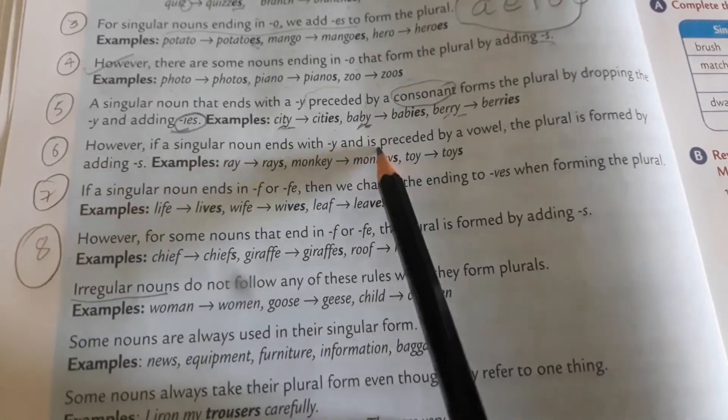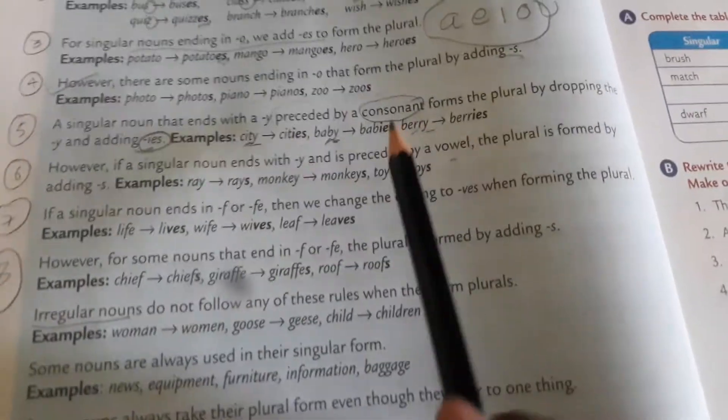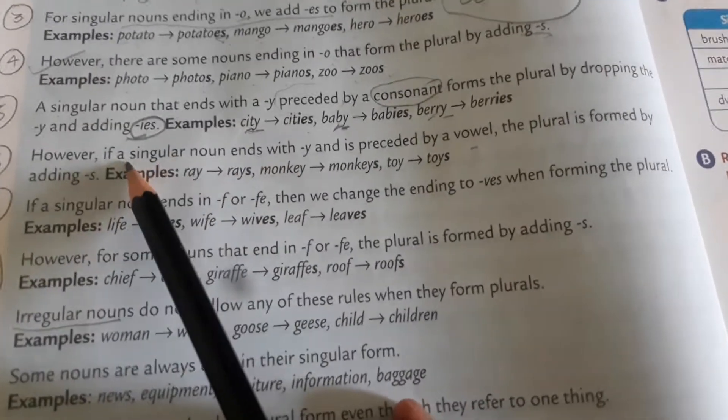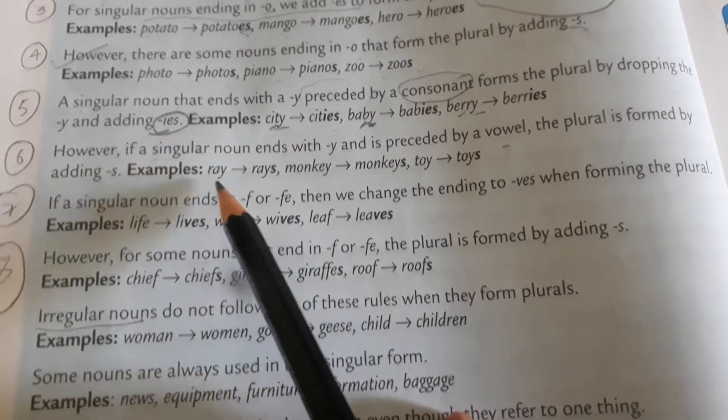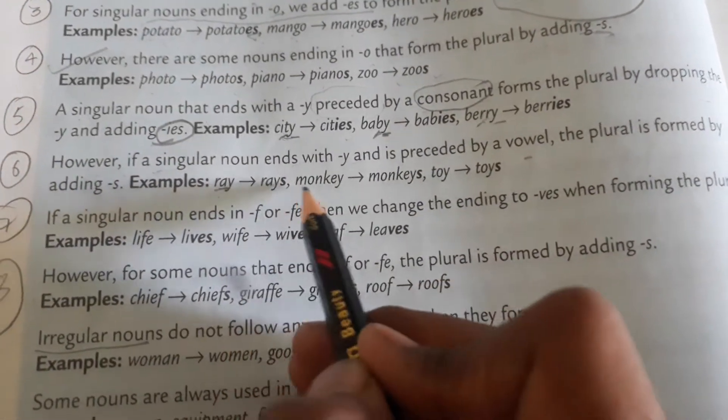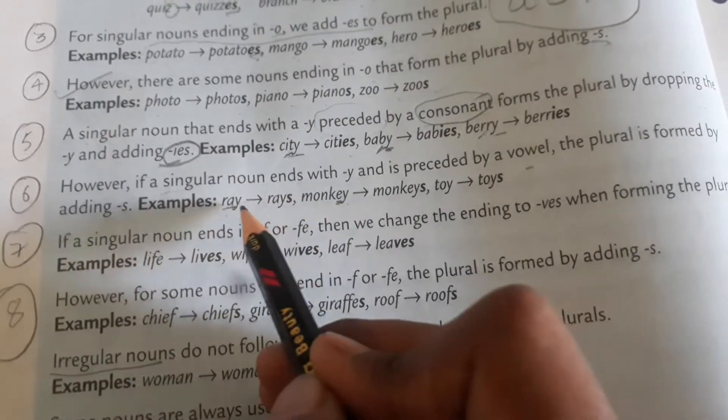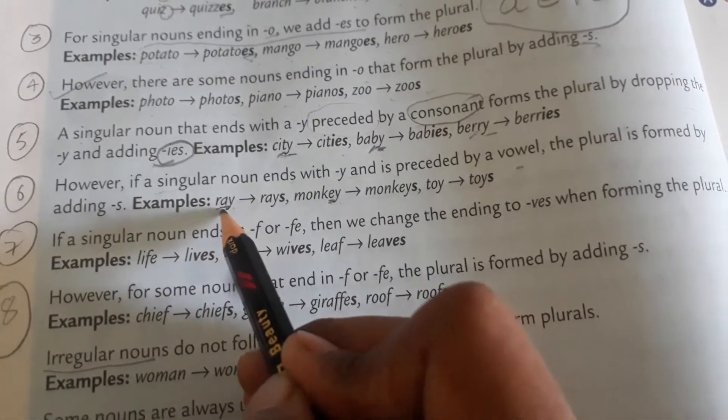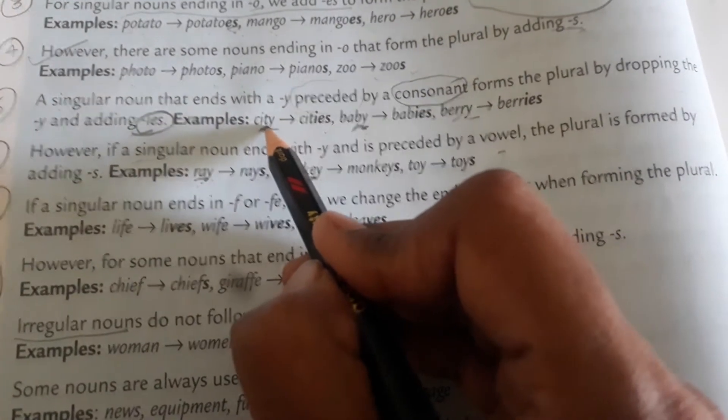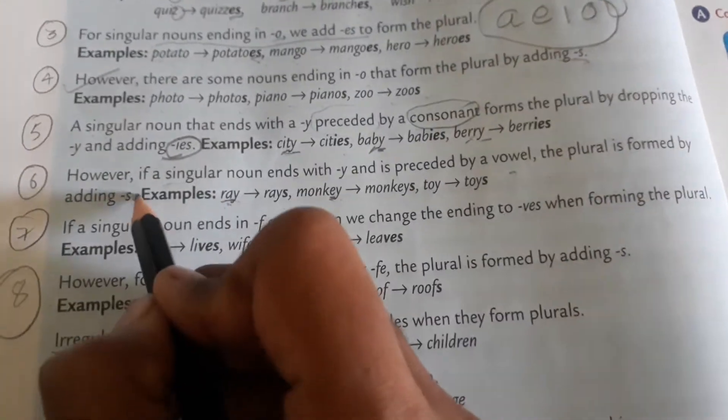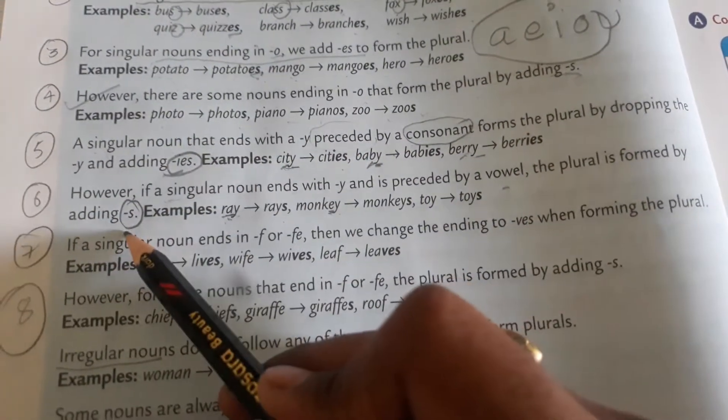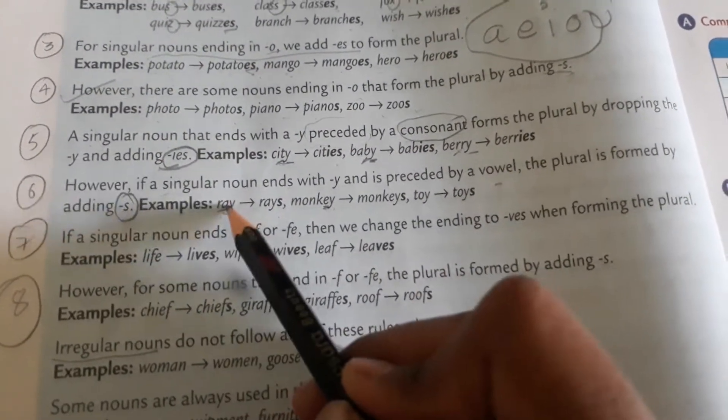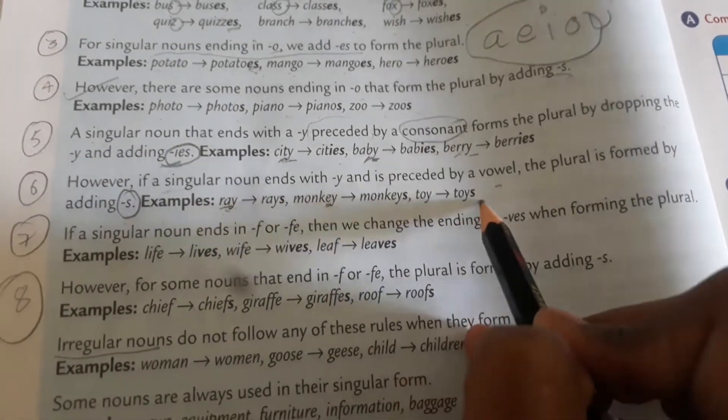However, if a singular noun ends with Y and is preceded by a vowel - those singular nouns whose end is Y, but one alphabet before is a vowel like A, E. Monkey has E, ray has A. Y is preceded by A. City has T, T is not a vowel, it's a consonant, but A is a vowel. So if it's a consonant, we add I, E, S. And if it's a vowel, we simply add S. Ray becomes rays, monkey becomes monkeys, toy becomes toys.